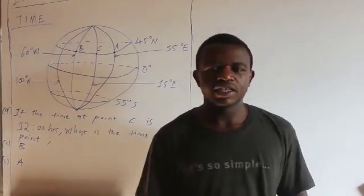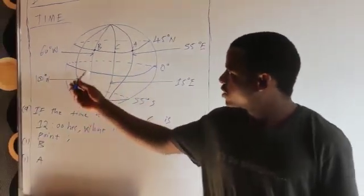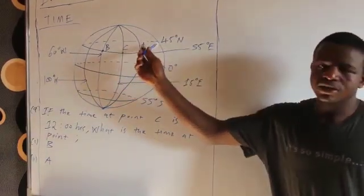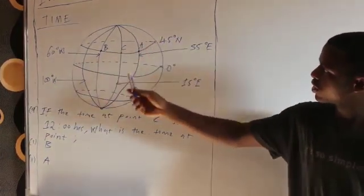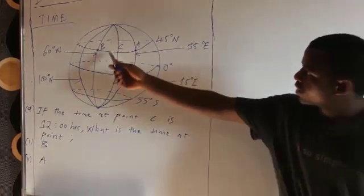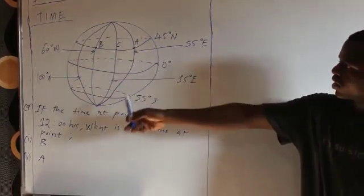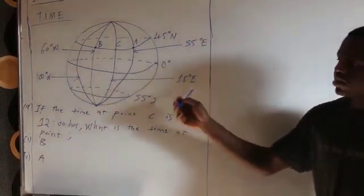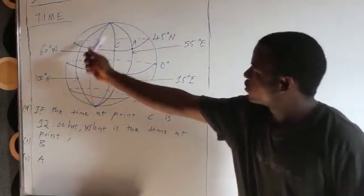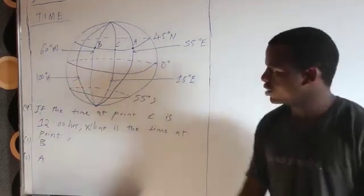I have an example already written. In this example, point A is on latitude 45 degrees north and longitude 55 degrees east. Point C is on latitude 45 degrees north and longitude 15 degrees east. Point B is on latitude 45 degrees north and longitude 16 degrees west.